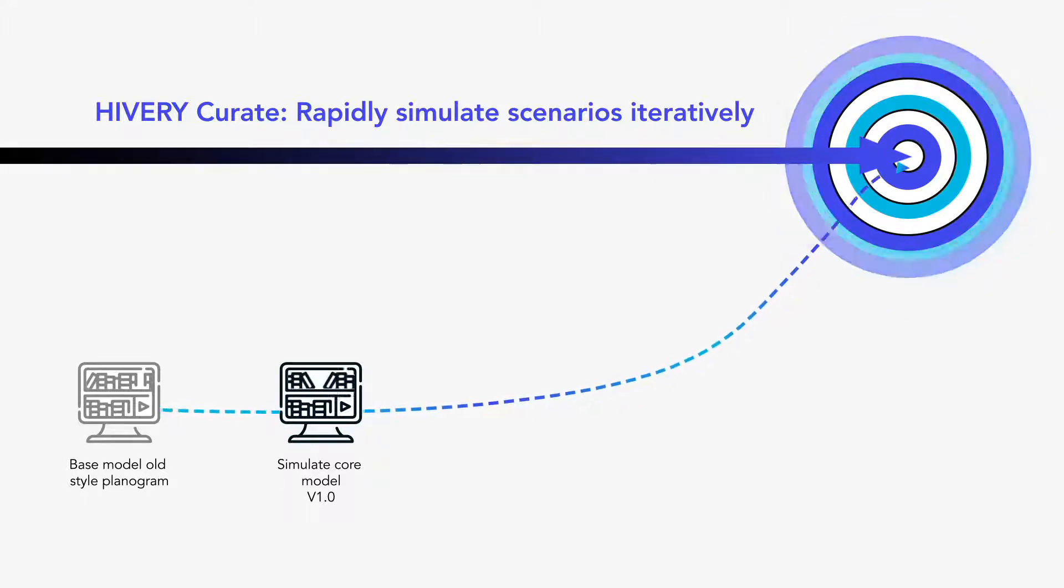You also add your global assortment and space constraints like days of supply, points of distribution thresholds, or product flow requirements like vertical brand blocking or any other global planogram override. You hit simulate and Hivory Curate provides you the quantified impact of that strategy.